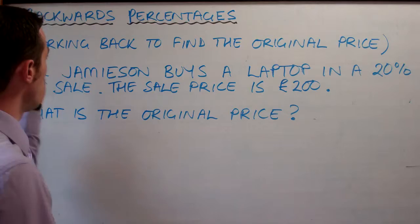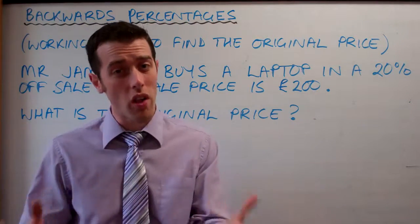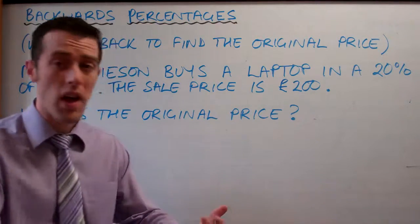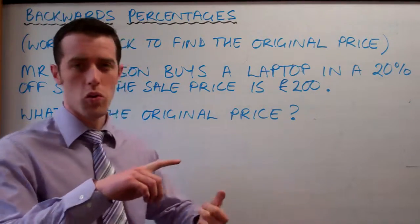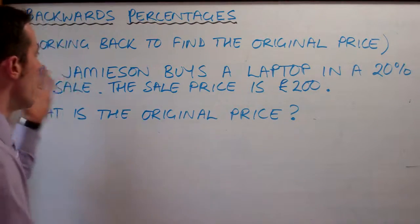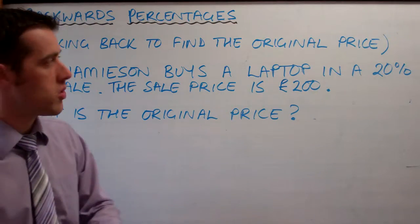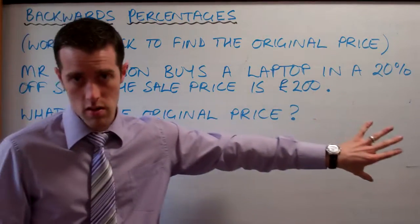All I did was take 20% of £200 and add it back on, but that didn't work out. So how do we actually tackle a problem like this? This is generally called backwards percentages — it's got other names like inverse percentage and also reversing the change. Usually the question will say, find the original price.